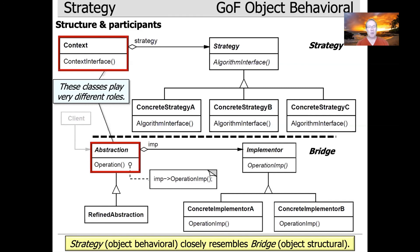It also turns out that bridge and strategy get combined a lot to make a bridge-strategy compound pattern, which has an abstraction where you can replace the implementer hierarchy using different kinds of strategies — and you may even do that dynamically. So those are some of the ways to differentiate strategy and bridge.